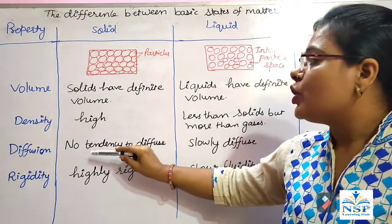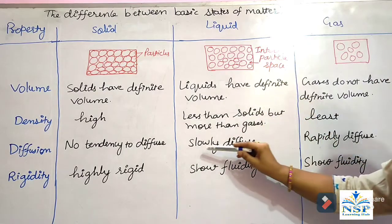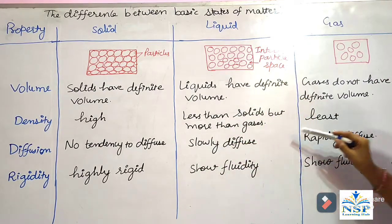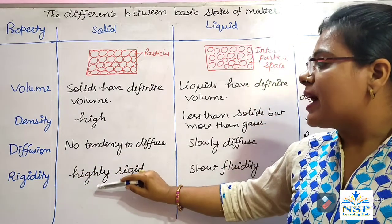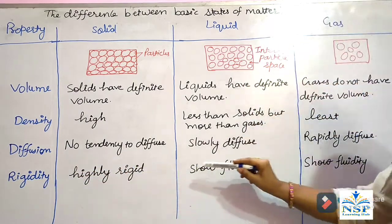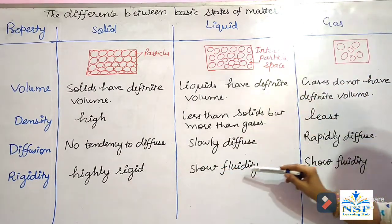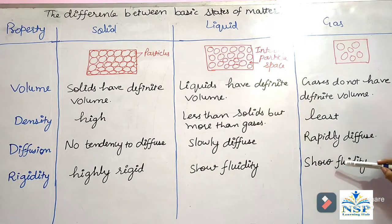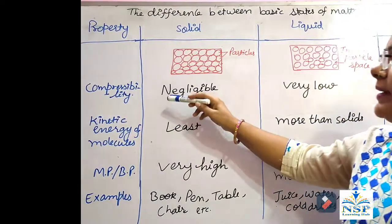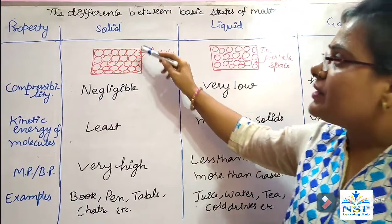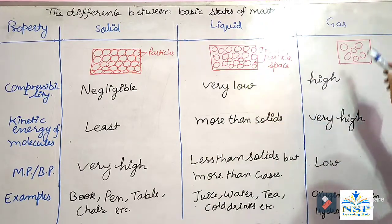Diffusion — solids have no tendency to diffuse. But in liquids, they slowly diffuse. And gases rapidly diffuse. Rigidity — solids are highly rigid because of close packing of particles. Liquids show fluidity and gases also show fluidity. Compressibility is negligible in solids, very low in liquids, and very high in gases state.